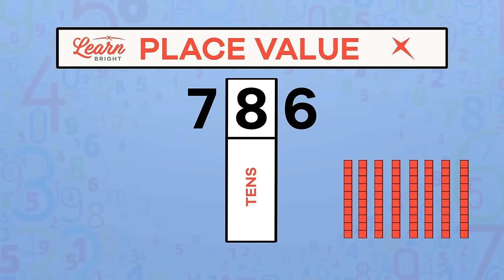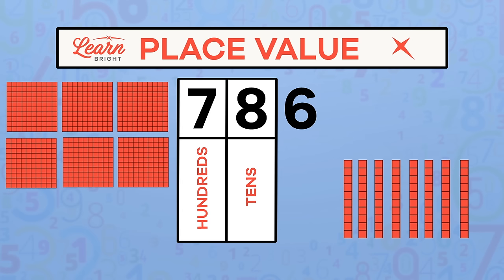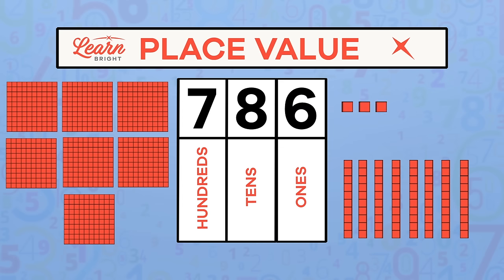Which digit is in the hundreds place? Did you say 7? You got it! There are seven hundreds, or 700. Finally, how many ones are there? I bet you said 6. You're on a roll!